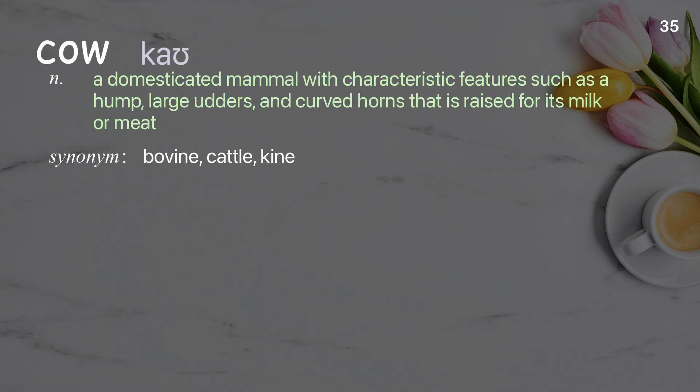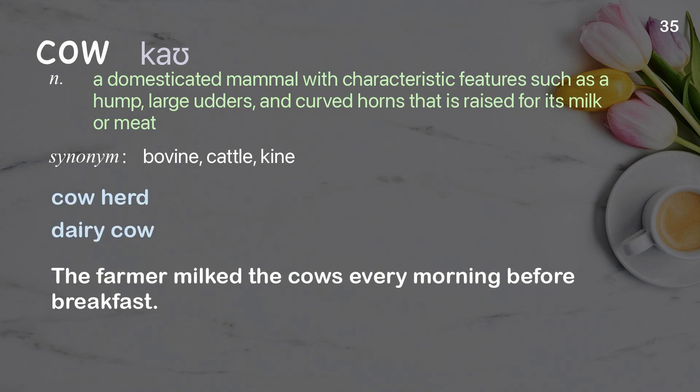Cow. A domesticated mammal with characteristic features such as a hump, large udders, and curved horns that is raised for its milk or meat. Examples: cowherd, dairy cow. The farmer milked the cows every morning, before breakfast.